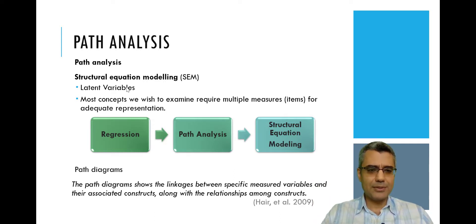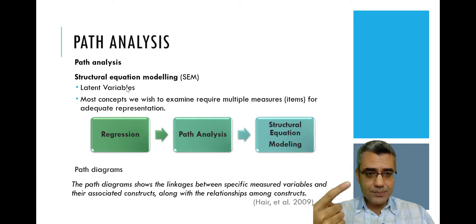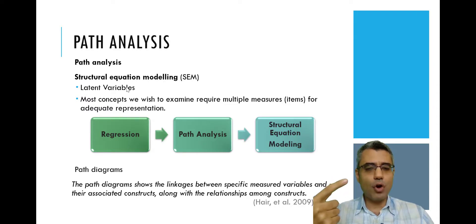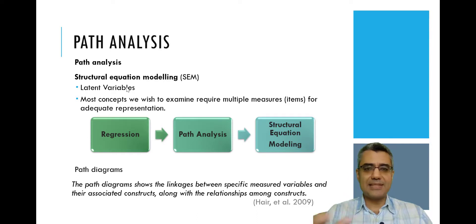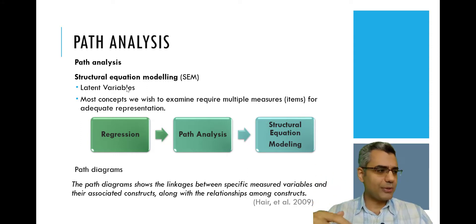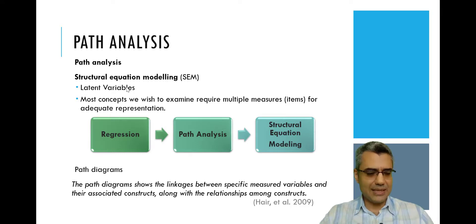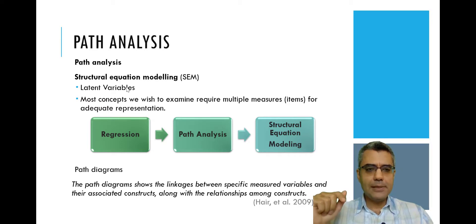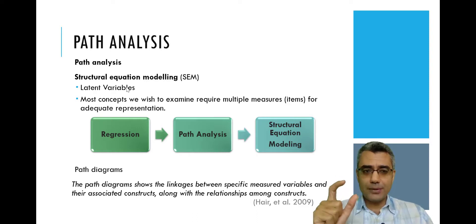In social science research, we have two types of variables: observed variables and latent variables. Observed variables are those you can measure directly — like salary, which might be ten thousand dollars per month, or height at 1.8 meters, or weight at 75 kg. You can measure them using instruments directly. However, there are many variables in social science research that you cannot measure them directly.